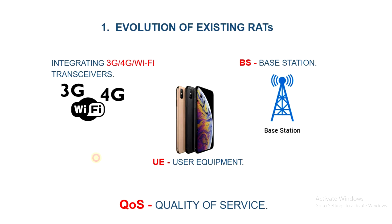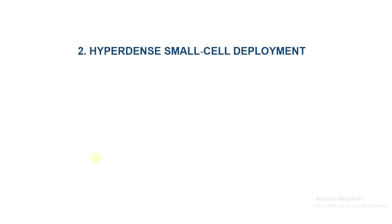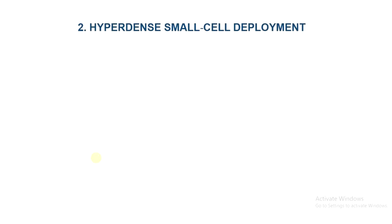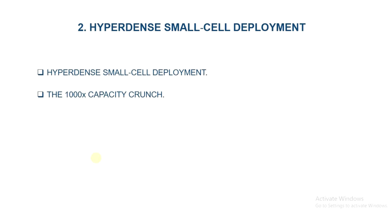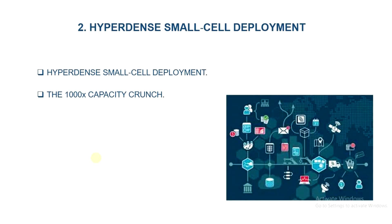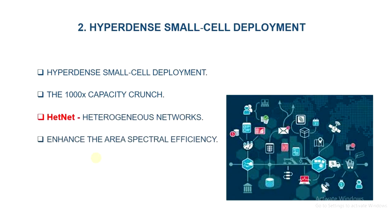The second component is Hyperdense Small Cell Deployment. Hyperdense Small Cell Deployment is another promising solution to meet the thousand-times capacity crunch, while also bringing additional energy efficiency to the system. This innovative solution, also referred to as HETNET — Heterogeneous Network — can help to significantly enhance area spectral efficiency.